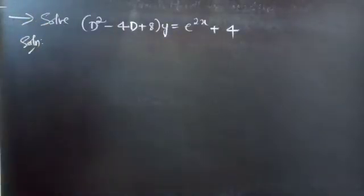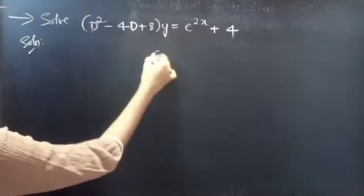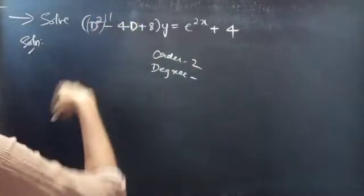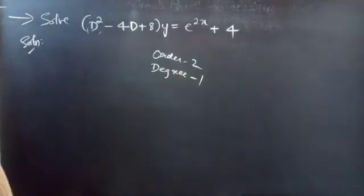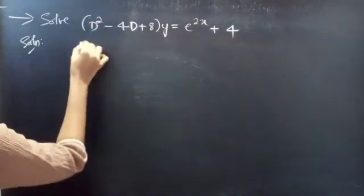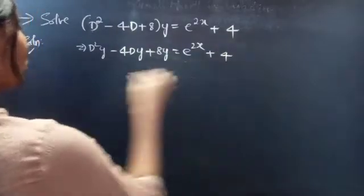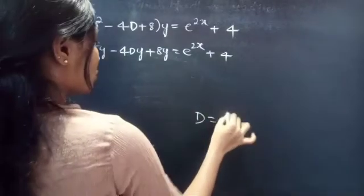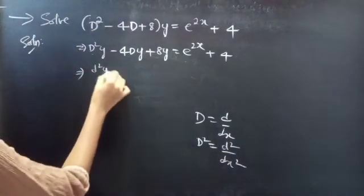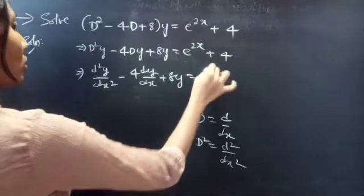Firstly, let's find the order and degree of the given equation. The highest derivative is D², so the order will be 2. The highest power of the highest derivative gives us the degree, so the degree will be 1. We can write the equation as D²y - 4Dy + 8y = e^(2x) + 4, where the differential operator D equals dy/dx and D² equals d²y/dx².